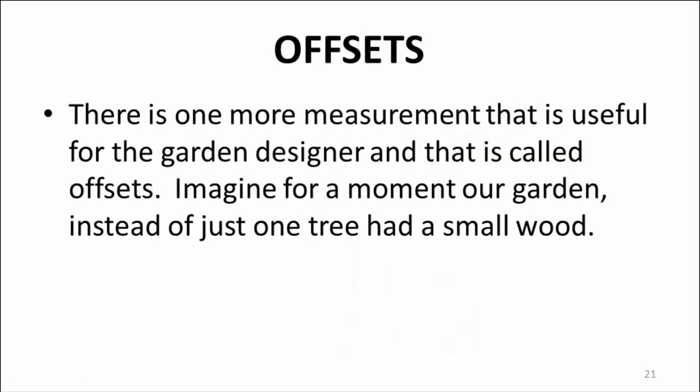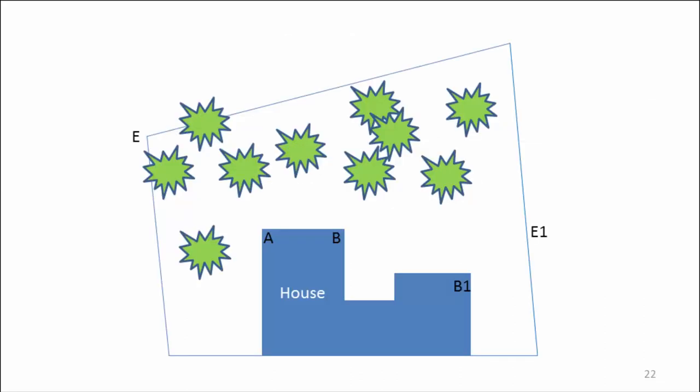There is one more measurement that is useful for garden designers, and these are called offsets. Imagine for a moment our garden, instead of just one tree, has a small wood. You need two tape measures for this. Lay one along the ground between two known points, for example, E and E1.